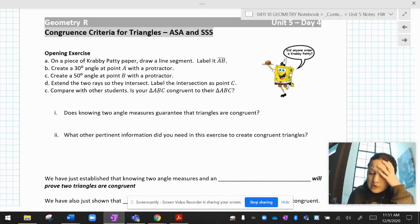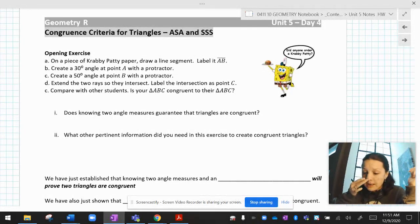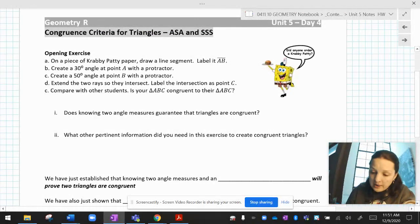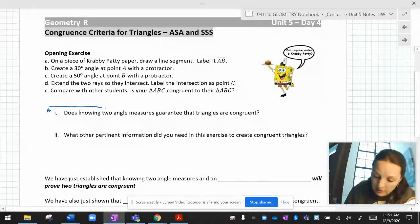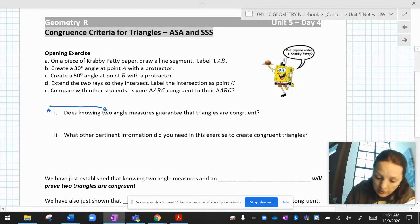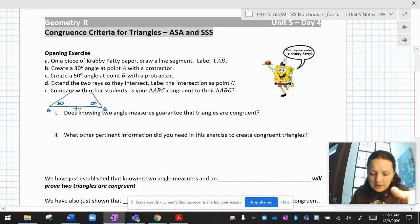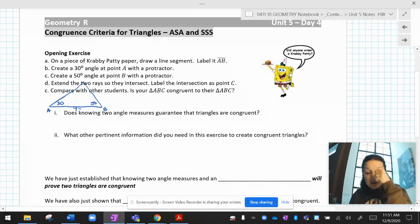And it says create a 30 degree angle at A, a 50 degree angle at B, and then see if you have the same triangle as somebody else. So one way I could do that is I could say, all right, here's a line. I'm going to call that AB. If I put a 30 degree angle here at A and a slightly bigger 50 degree angle here at B, and let's say I know that's seven inches long, once I have the 30 and the 50 on either end, I would just extend these lines until they intersect.